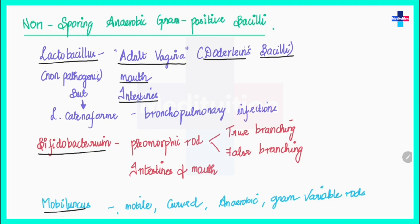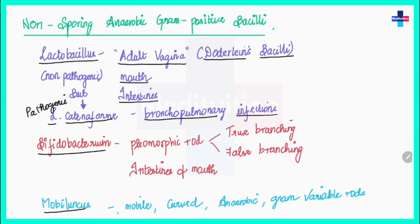Lactobacillus protects the host from urogenital infections. It is also present in the intestine, where it is needed for preventing gut infections and belongs to the normal gut microflora. It is mostly non-pathogenic, but sometimes pathogenic strains exist, like Lactobacillus cateniforme, which causes bronchopulmonary infections.